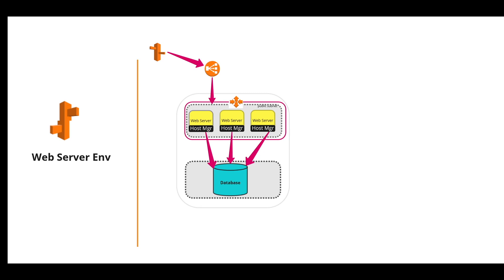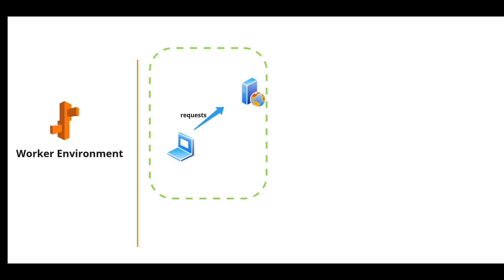Now let's look at the Worker Environment. The Worker Environment is used by applications that have back-end processing tasks. Consider a scenario where a client makes a request to the web server — if the client request is time-consuming and processor-intensive, and the client makes another request in the meantime, the web server won't be able to process it and will decline. That's where the Worker Environment comes in. In the Worker Environment, the application interacts with Amazon's queuing service, SQS. When you launch an application in a Worker Environment, Beanstalk creates an SQS queue. Beanstalk Worker Environment also supports SQS Dead Letter Queues, which store messages that could not be successfully processed.